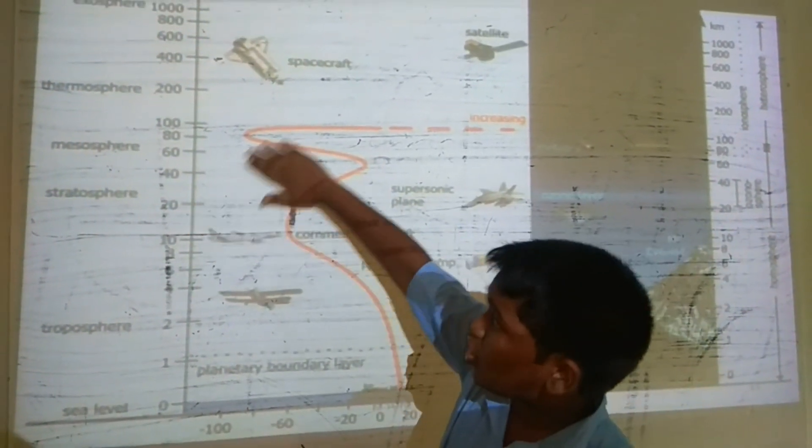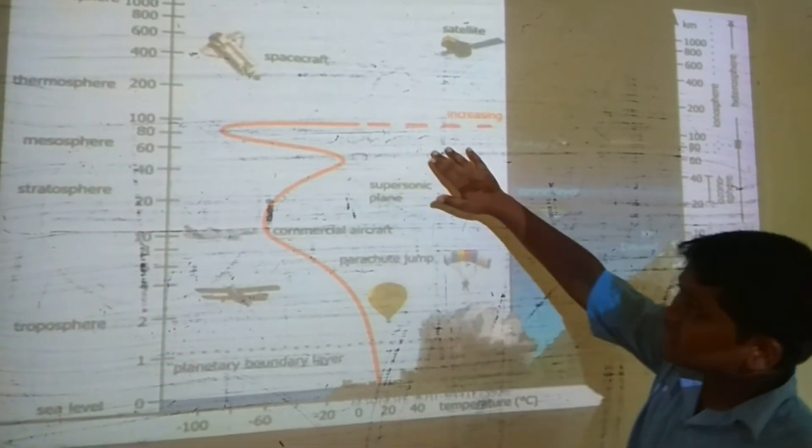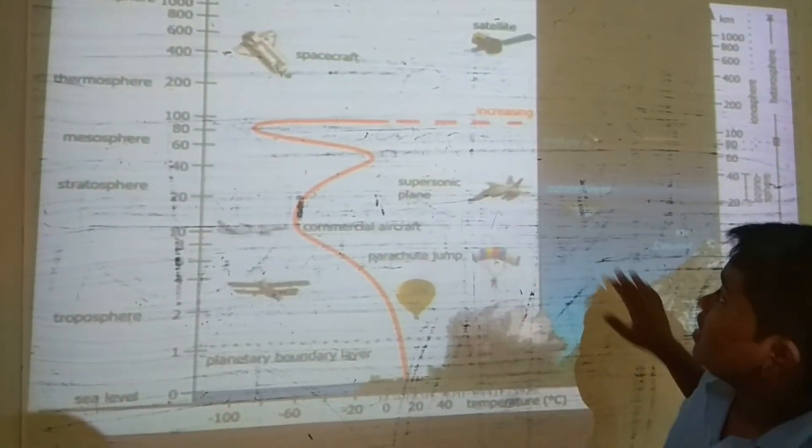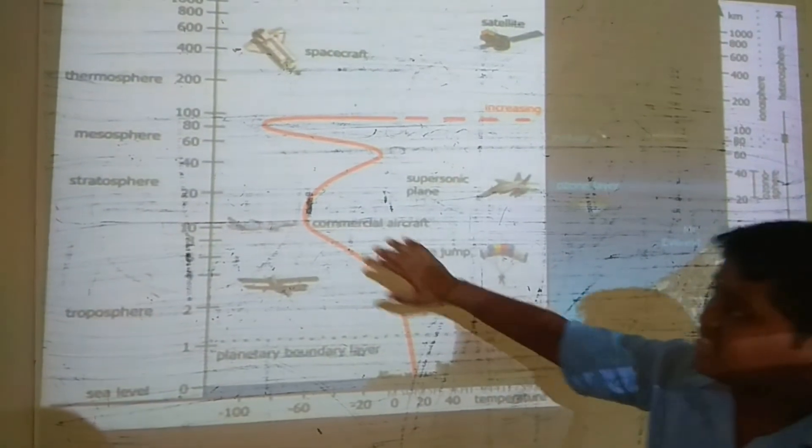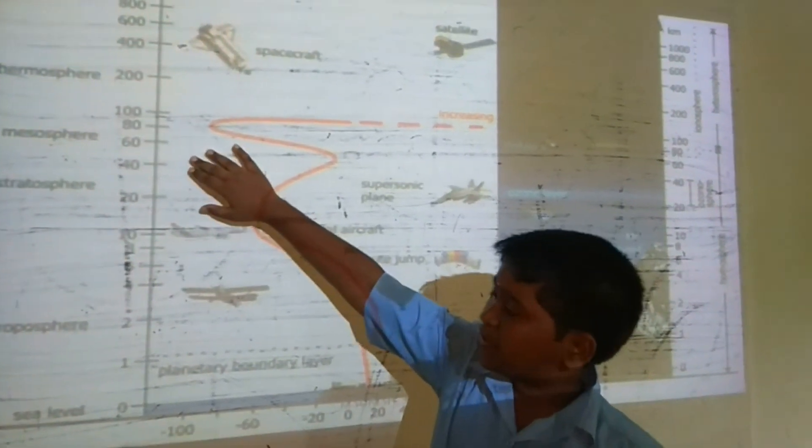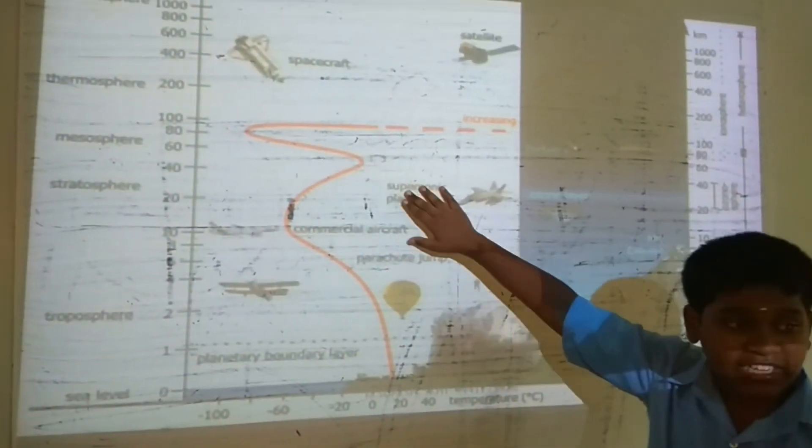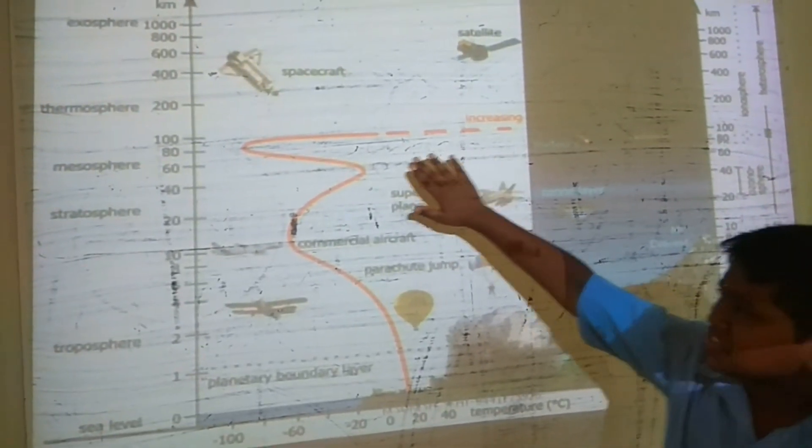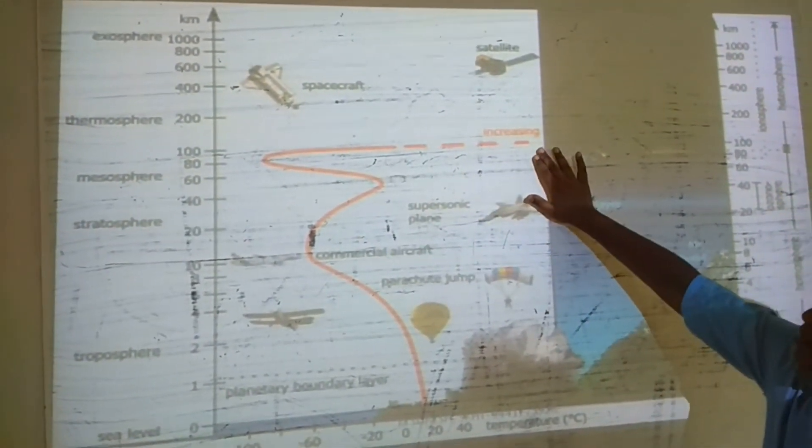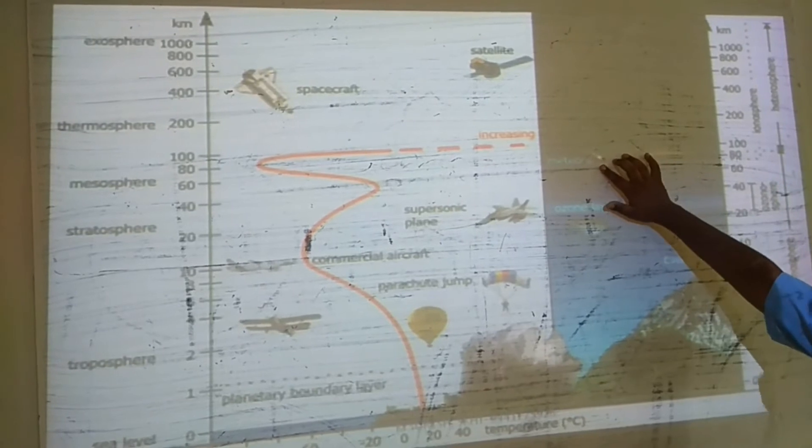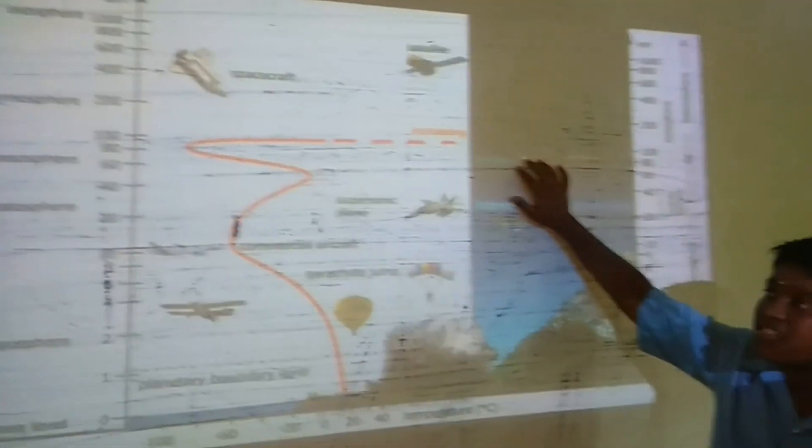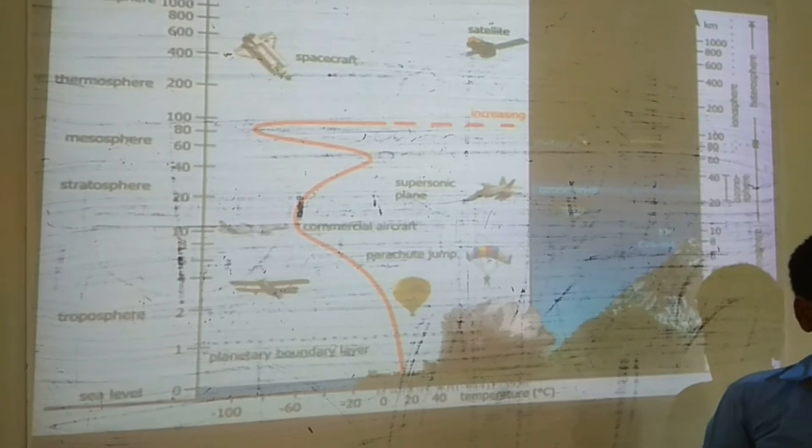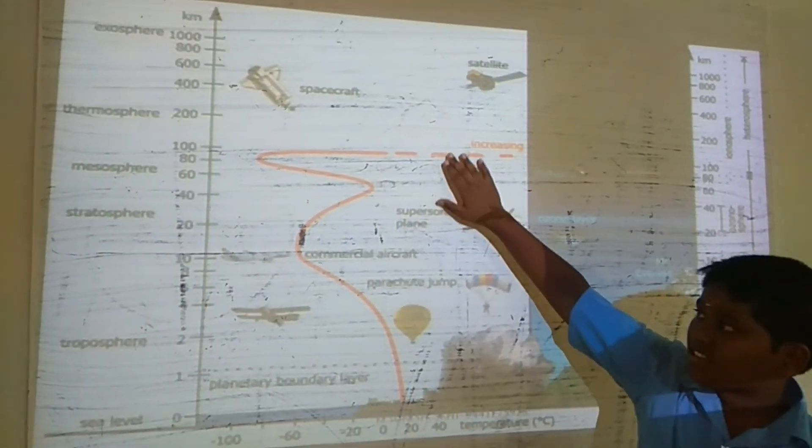The fourth sphere is the Thermosphere, up to 400 kilometers. The temperature increases very much in this sphere. Metals are present in it and it is also called the Ionosphere because ion particles are very high in this sphere.